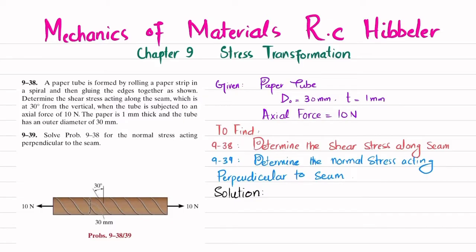You can see this is the paper tube formed by rolling the paper strip in a spiral and then gluing it. A tensile axial load of 10 Newton is applied, and you can see the seam acting at 30 degrees from the vertical. We have to find the shear stress along this seam and the normal stress acting perpendicular to it. Let's start with the solution.